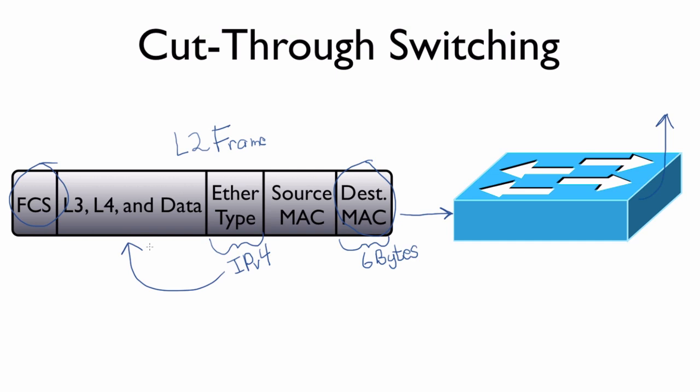But basic cut-through switching, what you're responsible for understanding for the CCNA exam is that with cut-through switching, as soon as the switch sees those first six bytes, as soon as it sees the destination MAC address, it can start forwarding that frame, therefore decreasing latency. The downside is we might forward a frame that's a corrupted frame, and we haven't taken the time to check that out yet.